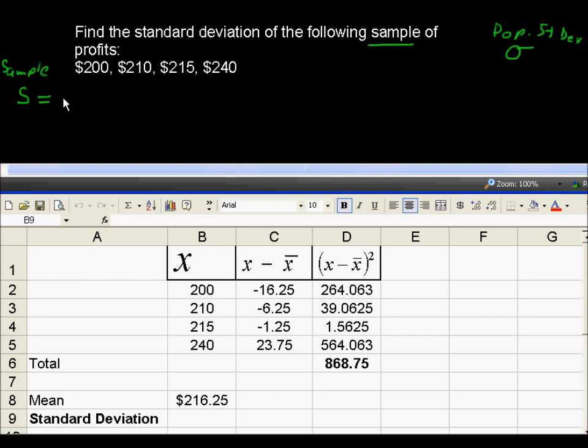That equals the square root of the sum of these values, x minus x-bar quantity squared, over n minus 1, and it's the square root of this entire fraction.